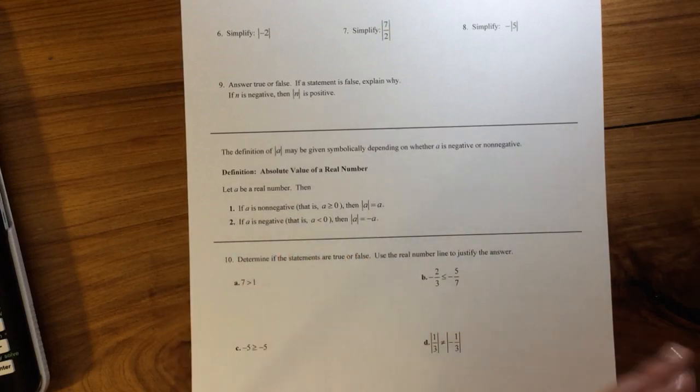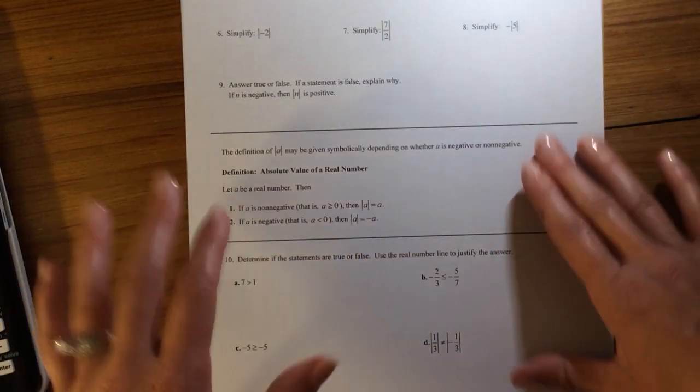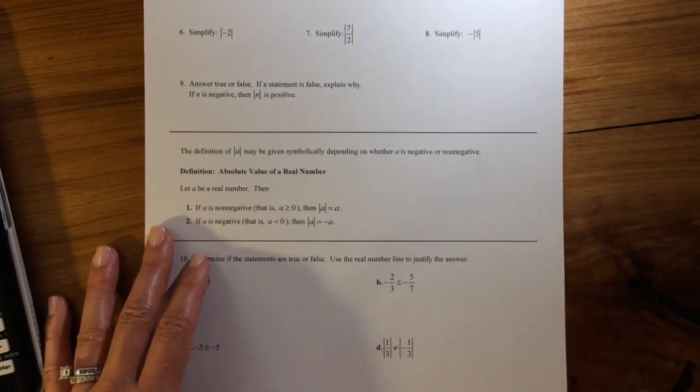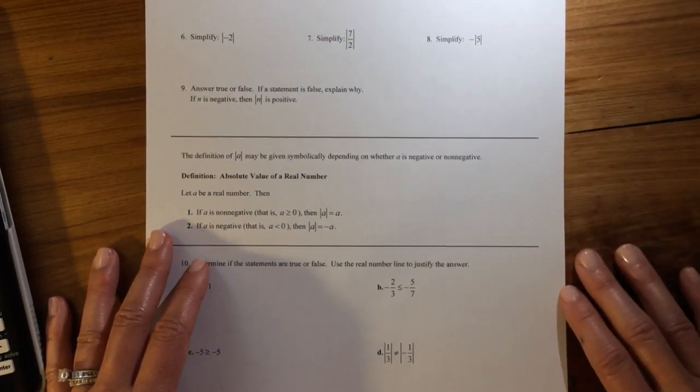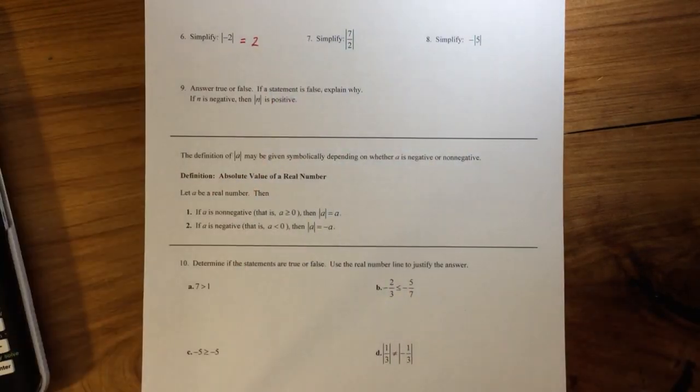So if I'm simplifying the absolute value of negative 2, well, to get rid of the bars, we can just say that that's 2, because I'm 2 units away from the left or from the right.